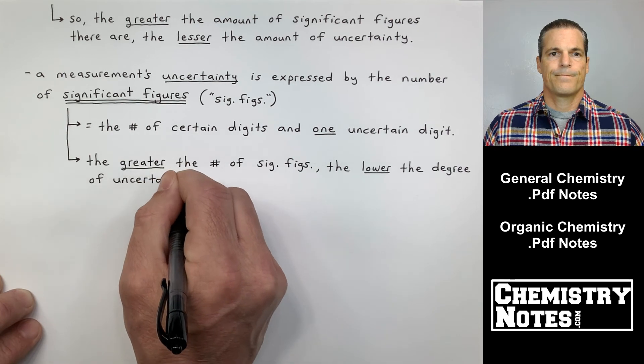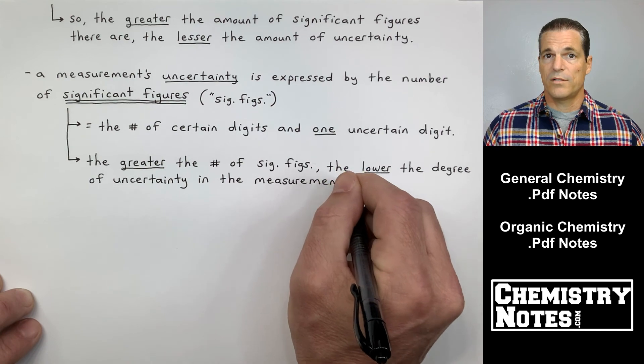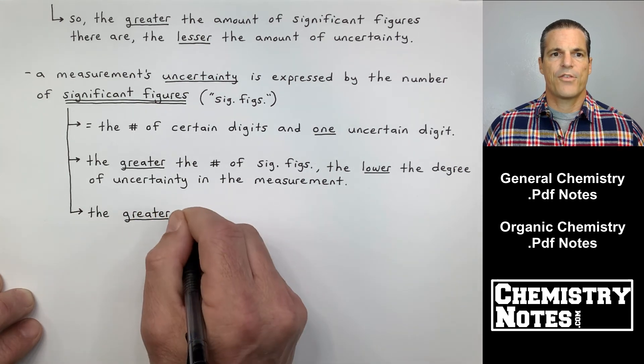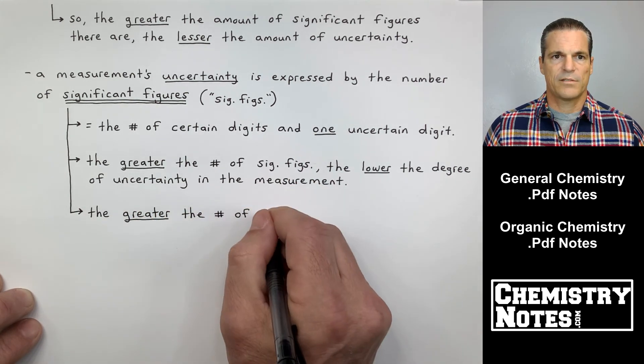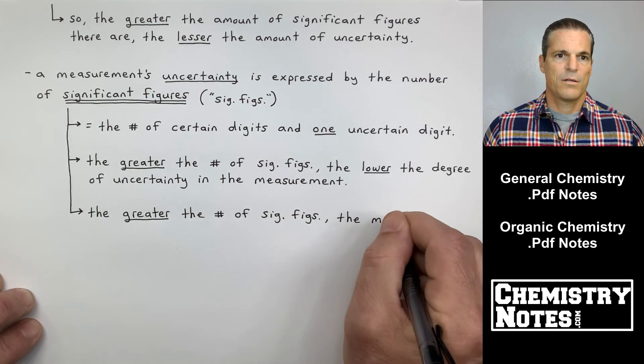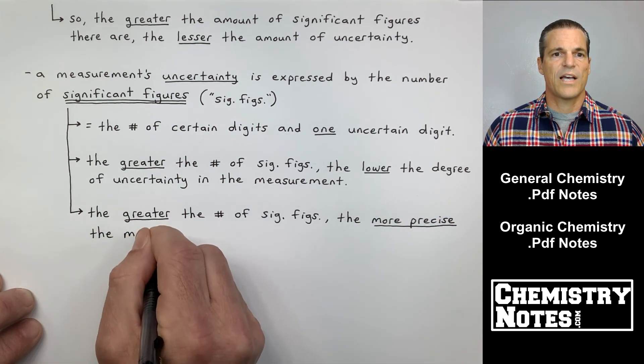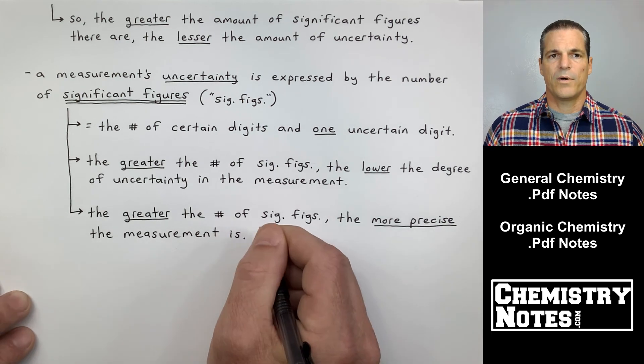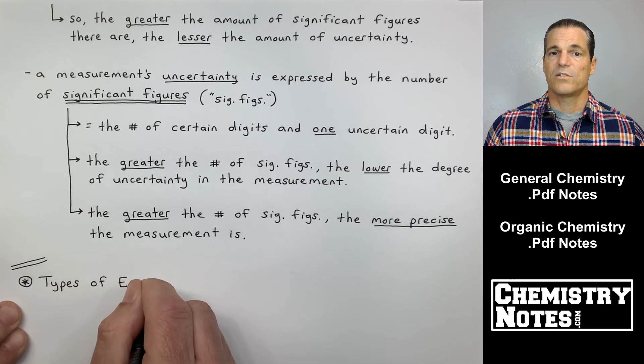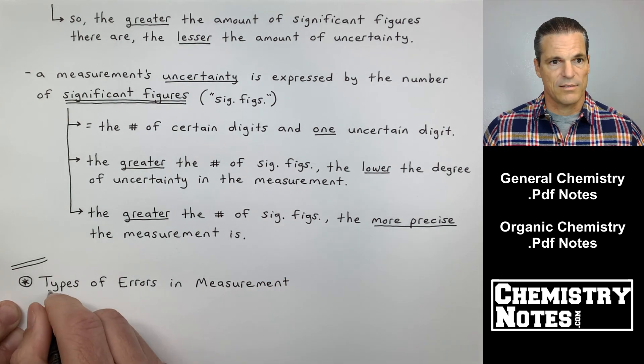And the number of significant figures, by the way, are all the known digits plus my one best guess. So significant figures, it's the number of certain digits and one uncertain digit. That one uncertain digit is your best guess. So I know I'm beating this over the head here. I'm beating a dead horse here. But the second bullet point says the same thing we've seen. The greater the number of sig figs, the lower the degree of uncertainty involved in that measurement. The greater the number of significant figures, the more precise the measurement is. So these two bullet points at the end here are kind of saying the same thing.